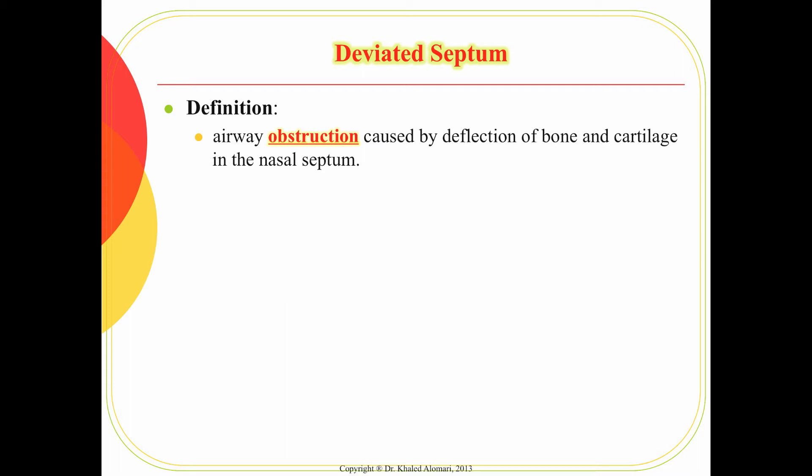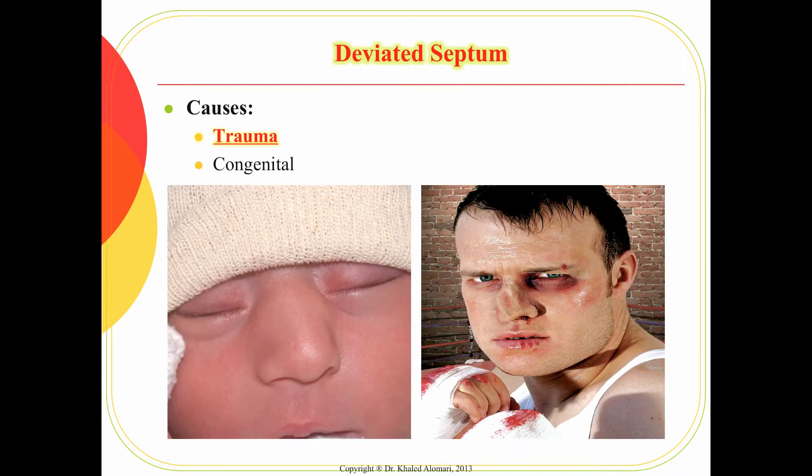This problem is caused by deflection of bone and/or cartilage in the nasal septum, resulting in airway obstruction. The common causes of deviated septum are trauma or it could be congenital.